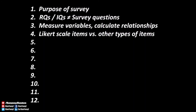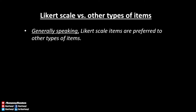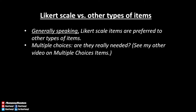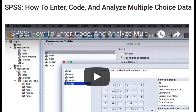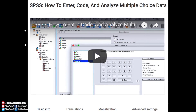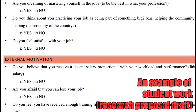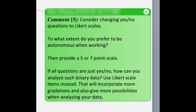Number four: Likert scale items versus other types of items. Generally speaking, it is advisable to use primarily Likert scale items in the survey, though there can be differences depending on the nature of the study. If you are thinking about using multiple choice items, consider whether it might be better to convert each of the multiple choices into a Likert scale item. Similarly, if you are thinking about yes or no questions — like 'Are you engaged at work?' with just yes or no as answers — maybe this item can be changed into a Likert scale item with one indicating completely not engaged and five indicating completely engaged.